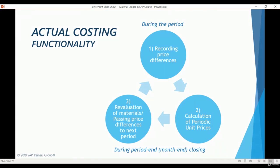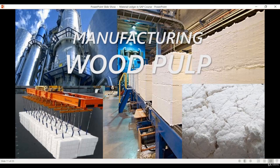We have now finished the short theory session of this course. Next, it's time to introduce you to our example company and the costing scenario we will be using. The costing scenario is based on the same example from our previous cost controlling course, expanded to cover also Material Ledger and Actual Costing functionality. Our example company owns a pulp mill in China that produces half a million tons of wood pulp per year. Wood pulp, also known as paper pulp, is a raw material used to produce a variety of paper and paperboard products including magazine paper, napkins, and folding cartons.